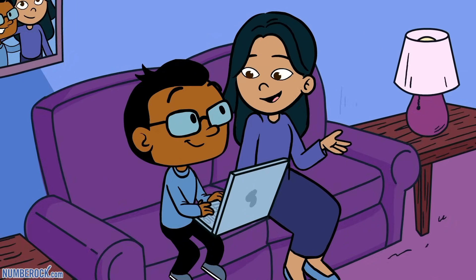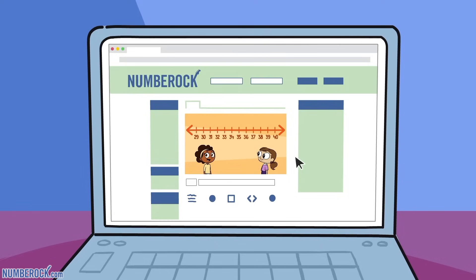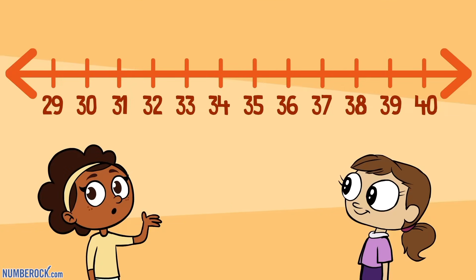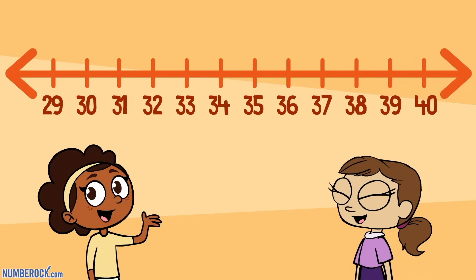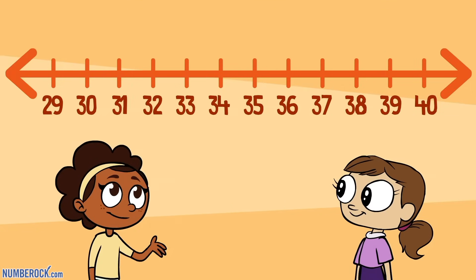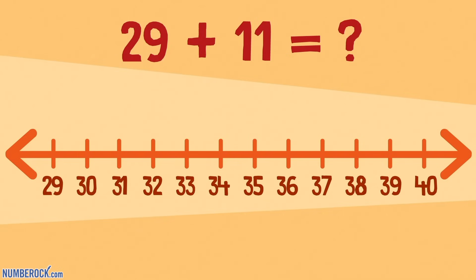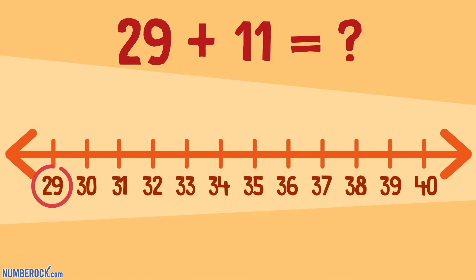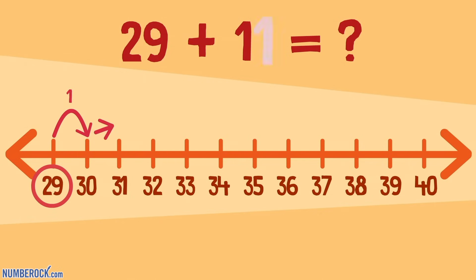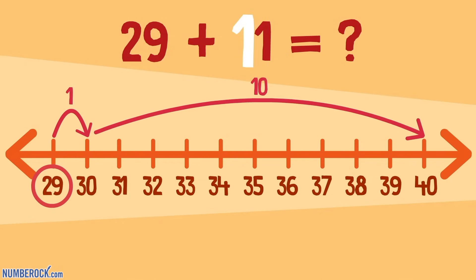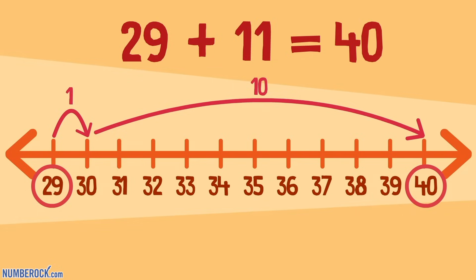This is chill! We can jump forward on number lines, and solve problems with addition signs. Let's add 11 to 29 — jump 1 and then 10 — 40 is the sum we'll find.